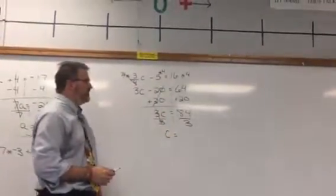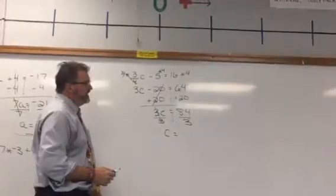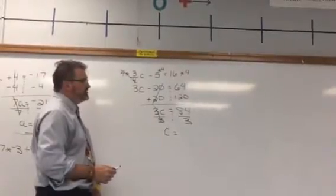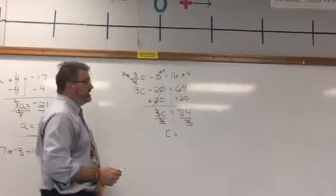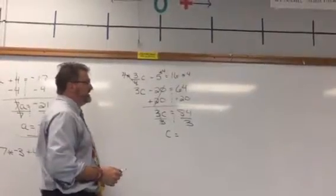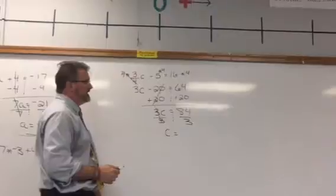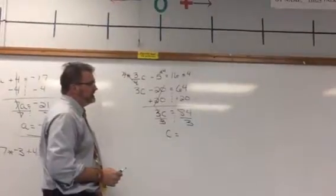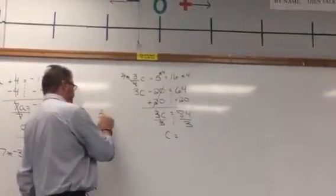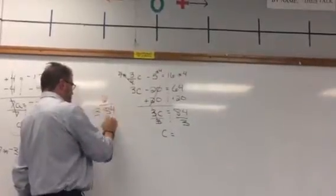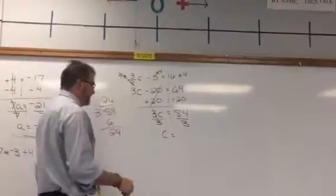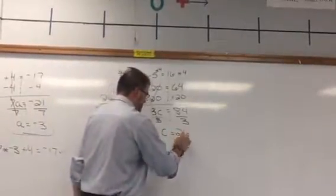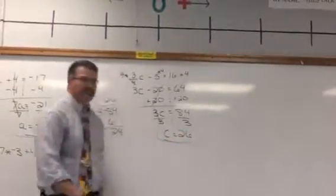And 84 divided by 3 is probably going to be... we're going to have to do it on the board because I don't have a calculator. 2, 6, 2, 4, 26. That's when I was close. And there it is. C is 26.